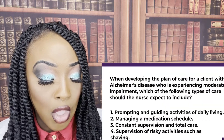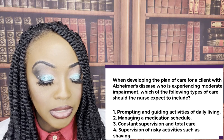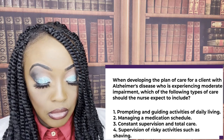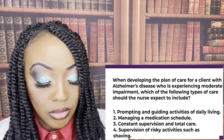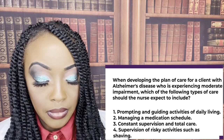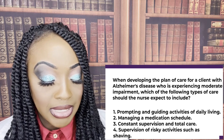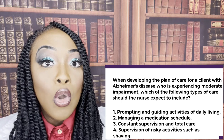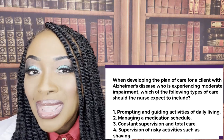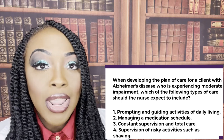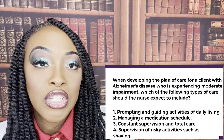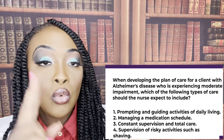Second question. When developing the plan of care for a client with Alzheimer's disease experiencing moderate impairment, which type of care should the nurse expect to include? One, prompting and guiding activities of daily living; two, managing medication schedule; three, constant supervision and total care; four, supervision of risky activities such as shaving. The correct answer is one — prompting and guiding activities of daily living. With moderate impairment, the patient can no longer make decisions for themselves, but they can still follow directions.